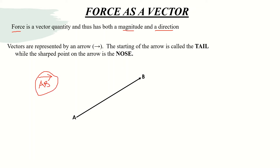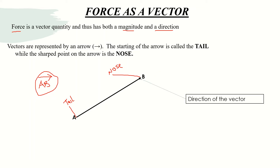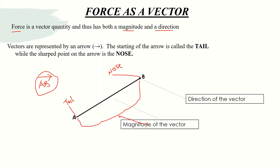The tail, or the starting point of the vector, is called the tail, while the sharp point of the vector is called the nose. Because the vector is moving in a particular direction, we call that the direction of the vector, while the length of the vector is referred to as the magnitude — or the size — of the vector.